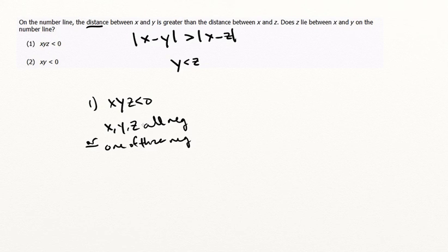So x is negative, y is negative, or z is negative, but only one of the three. Nevertheless, that's two options, so that's going to be insufficient.